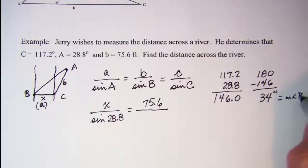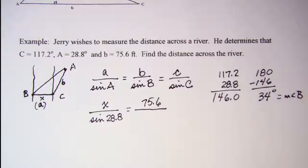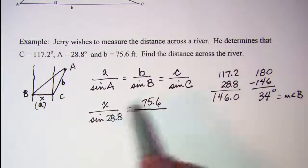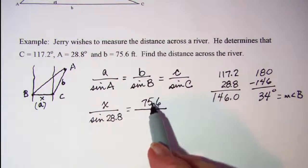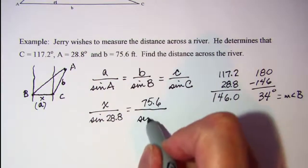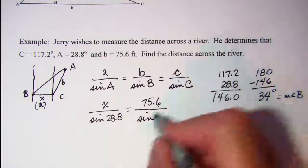So then I can finish my proportion here. Side B was 75.6, so I'm going to write sine of angle B, which is 34.